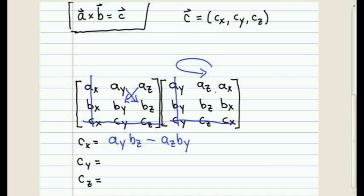And all you have to do is yet again, take the product across the diagonal of the remaining matrix and then take the difference in the products. So now we have AZ, BX minus AX, BZ. And that's equal to CY.